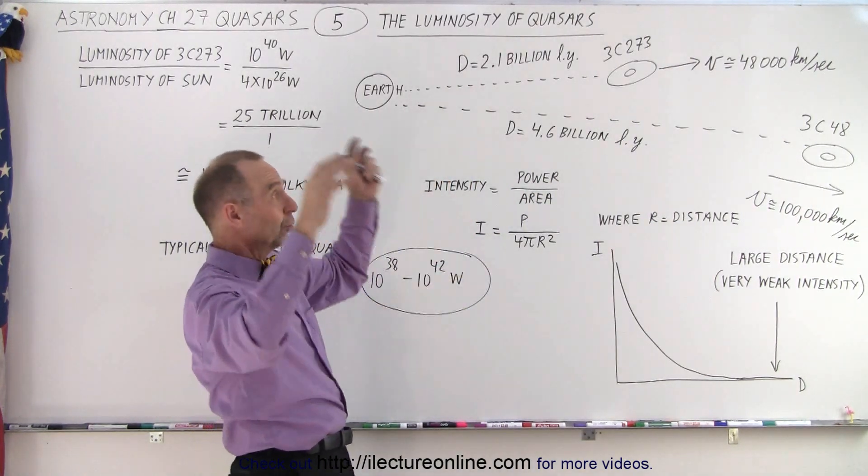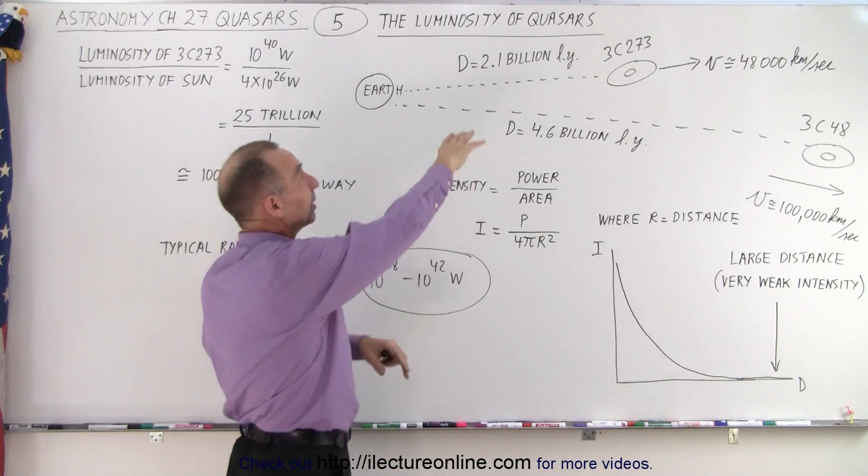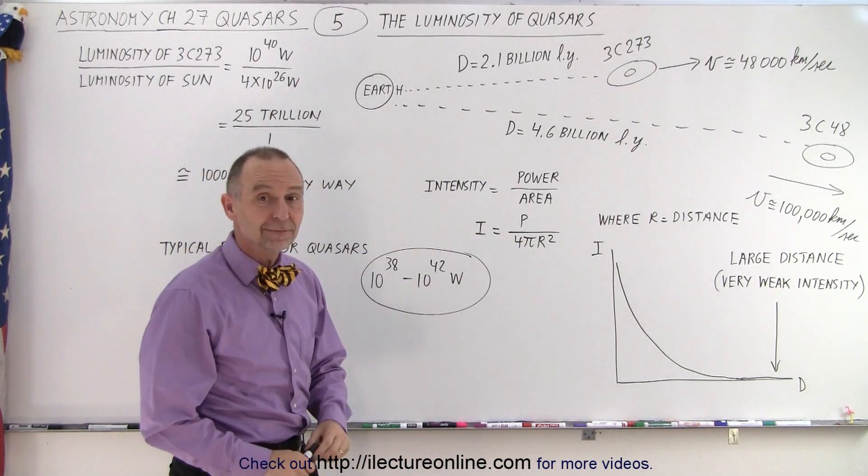And this was 3C48, the first object that we saw as a blue-like star. But they're inside the galaxy, right? Oh no, no, they're galaxies that are billions of light years away. Yeah, but they are in the galaxy.